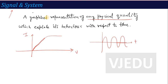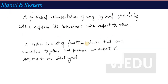There is another definition: what is a system? A system is the process required to process a signal. A system is basically a set of functional blocks which takes an input on one side and produces an output in response to that input signal. With respect to a particular input, the system generates a corresponding output.